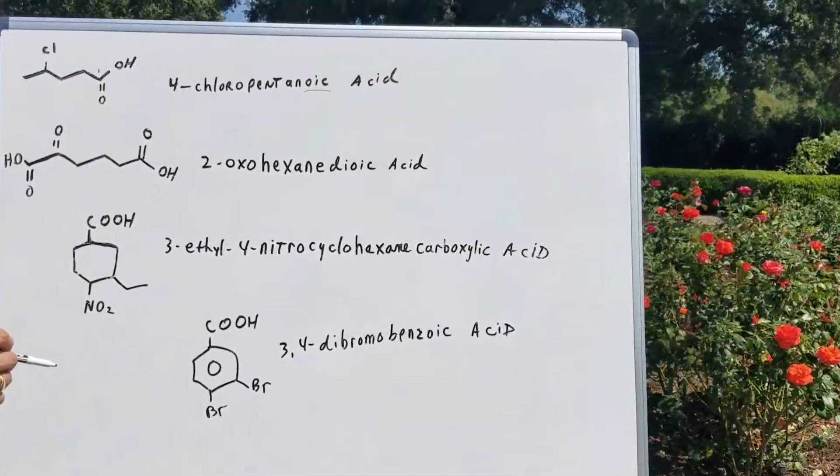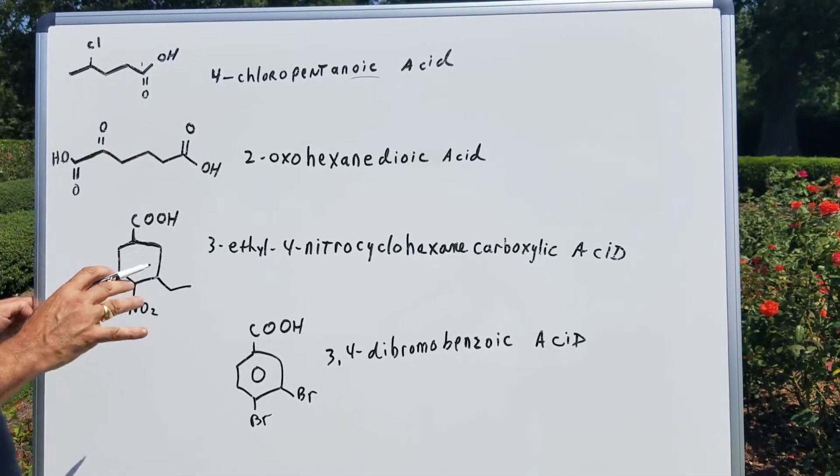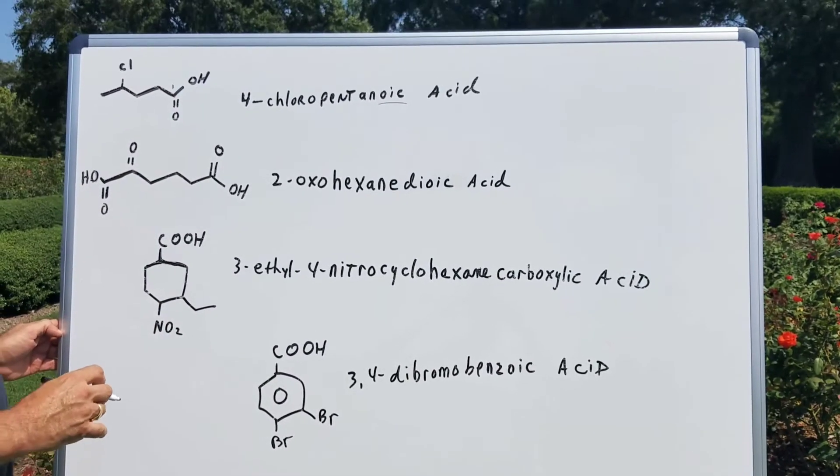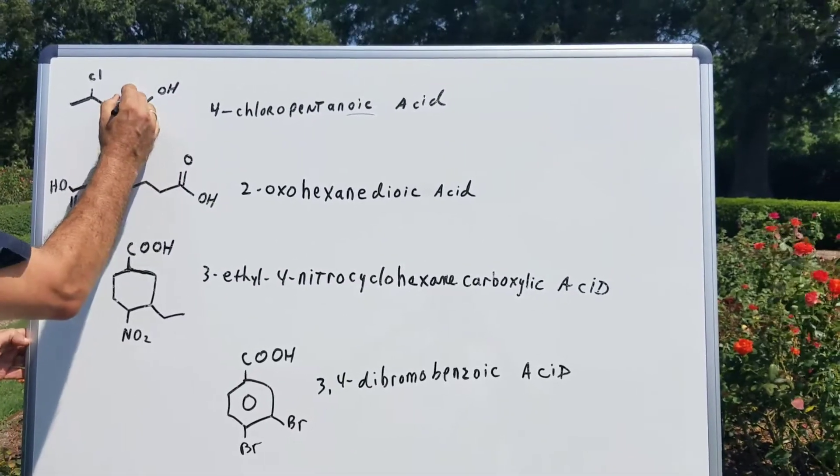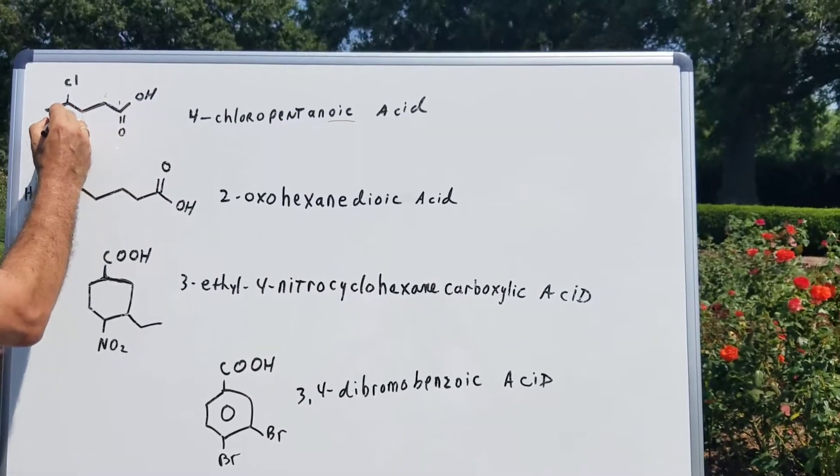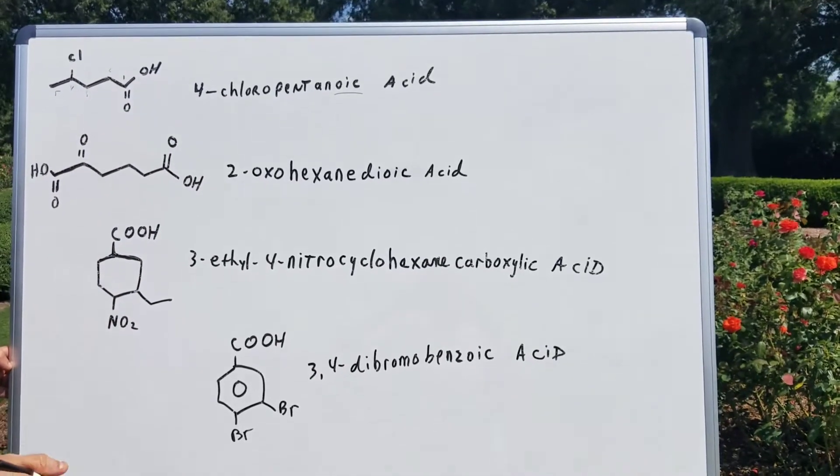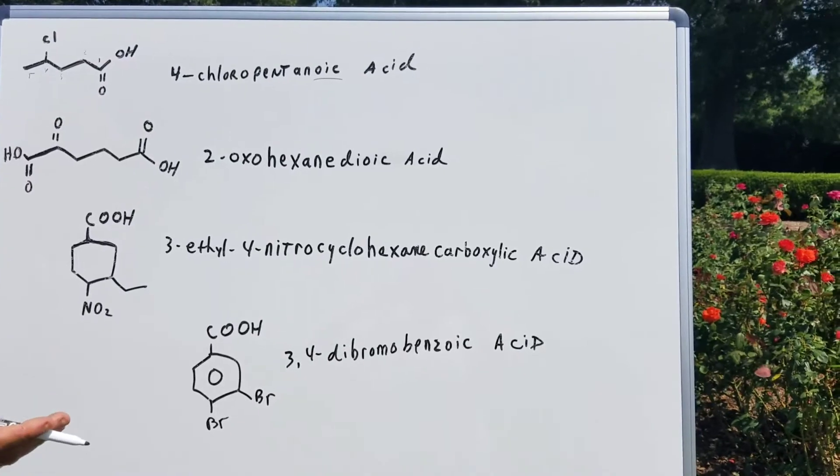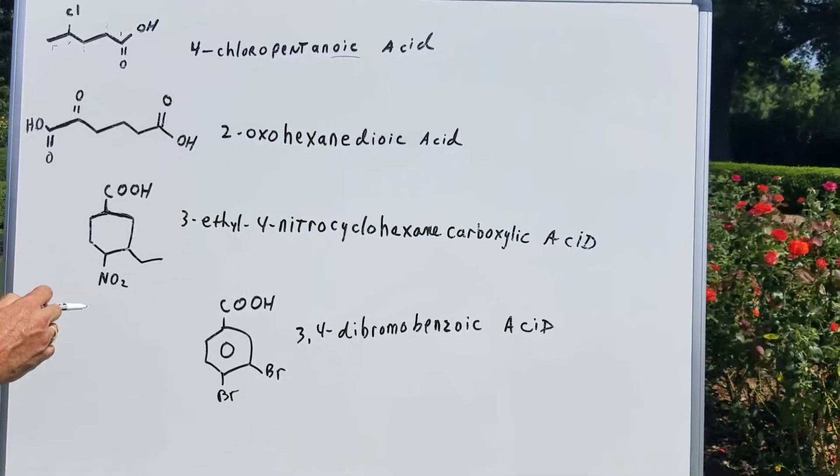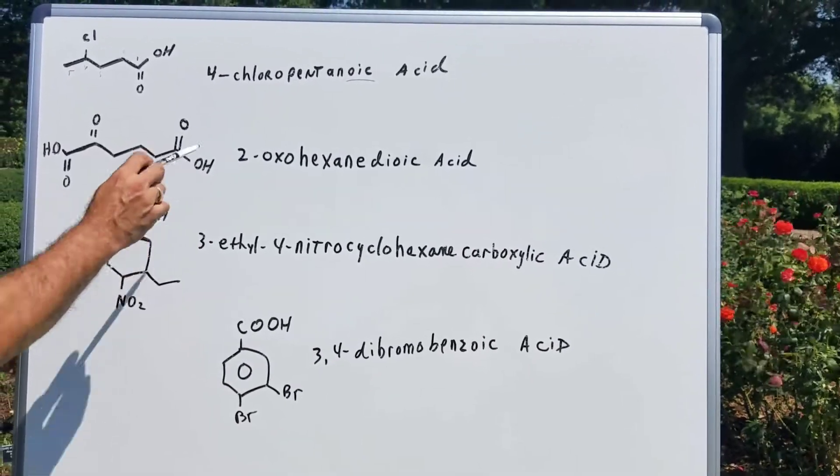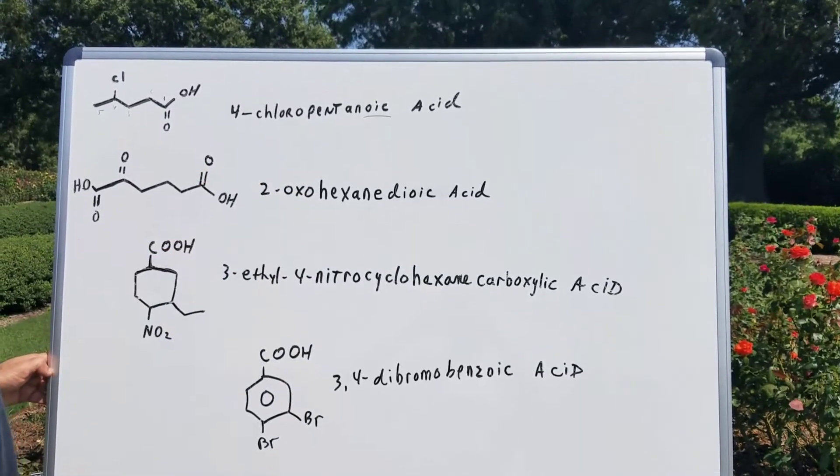The first problem I want to do with you is to go over how to name a very straightforward carboxylic acid. You count the longest chain here and you can see that there is five carbons. And what we're going to do is five carbons is called pentane. We're going to take off the word ane and add on. That's going to make pentanoic acid. And as you can see the chlorine is on carbon number four. So we call this compound 4-chloropentanoic acid.